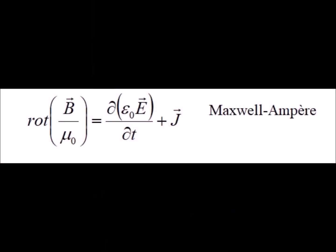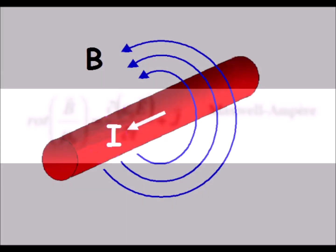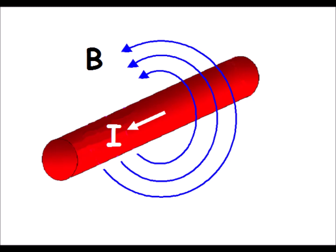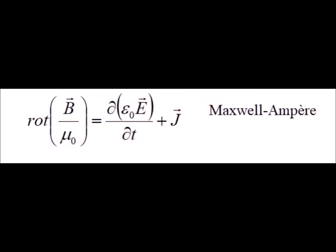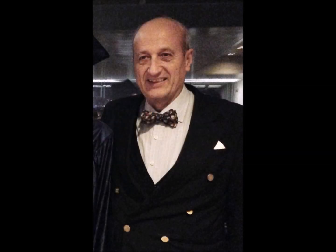The Maxwell-Ampere equation, on the contrary, implies that an electric current has a magnetic field, as is evident. But there is no electric current without electrons. This equation also includes a term called the displacement current, which is represented by the variation over time of an electric field. But this magnetic field only exists if there are electrons. It appears in a conductor of variable section due to the transverse displacement of the electrons in this type of conductor.